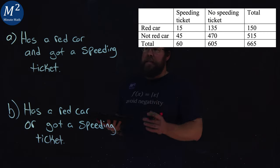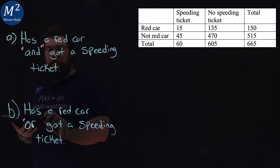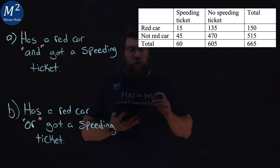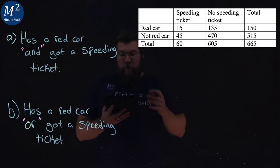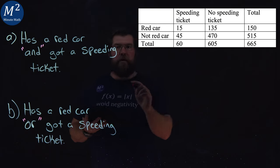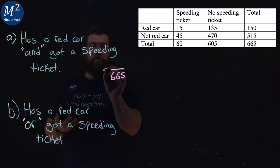Okay, let's learn. The key thing here is going to be the difference between and and or. We can see from our table there is a total of 665 people surveyed. That's going to be our denominator here. So 665, that's our total.